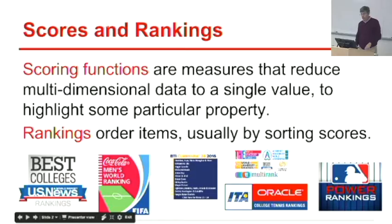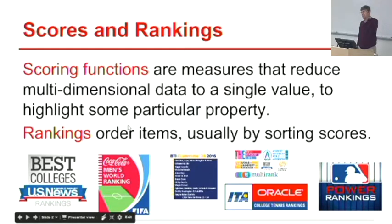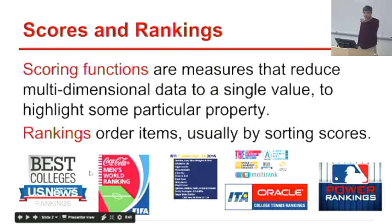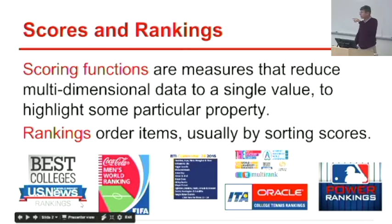There are two problems that are essentially the same. One is developing a scoring function that reduces your multidimensional data to a single value. Rankings say who's first, second, third, or fourth. If you have a function that scores by merit, you can sort them, and their position in the sorted order defines the ranking. Conversely, if you have a ranking and want a scoring order of merit, just take their ranking number. These two problems are essentially the same up to sorting.